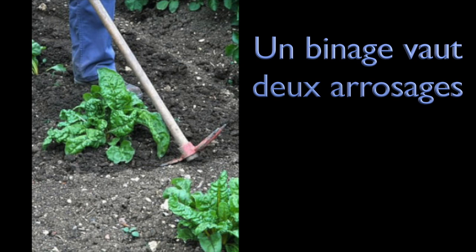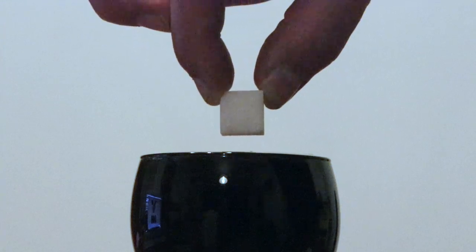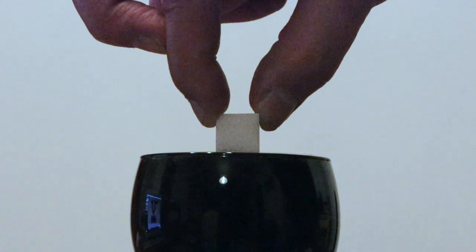Alors on entend souvent dire qu'un binage vaut deux arrosages. Et bien c'est tout à fait exact, la démonstration est facile à réaliser. Si on regarde ce morceau de sucre plongé dans le café, on voit très bien le café monter par capillarité dans ce morceau de sucre.